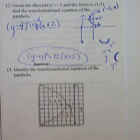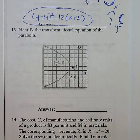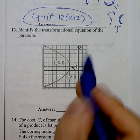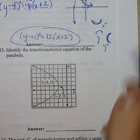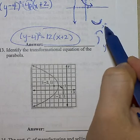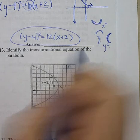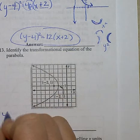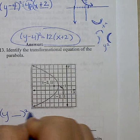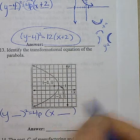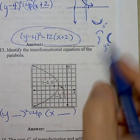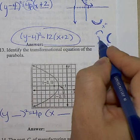Moving on to number 13. Identify the transformational equation of the parabola. So just like we said up above, if it opens up or opens down, it's x squared. If it opens left or opens right, it's a y squared. So I know this is a y squared problem. I also know because it opens to the left, I know that p has to be negative. So keep that in mind.